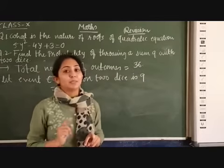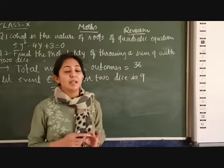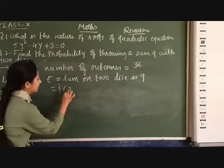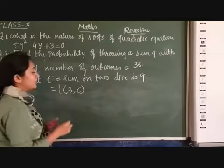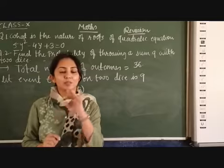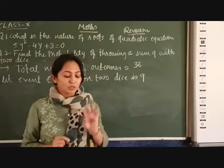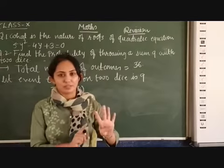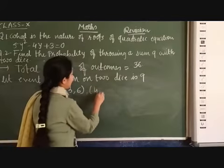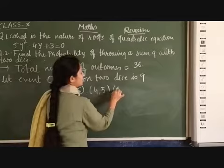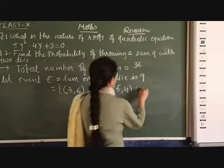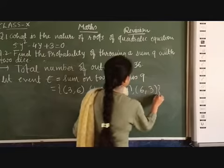Let me take 2. 2 + 6 = 8, not possible. Let me take 3. 3 + 6 = 9, so we can take this, (3, 6). Now, let me take 4. So sum I want is 9, so if I take 4 on the first dice, so on the second dice should be 5, (4, 5). If I take 5, so 4 can come, (5, 4). If I take 6, so here 3, (6, 3).